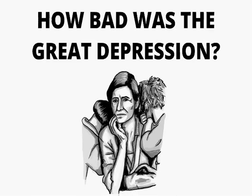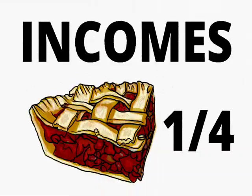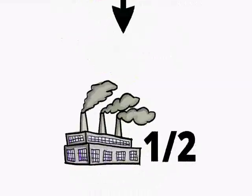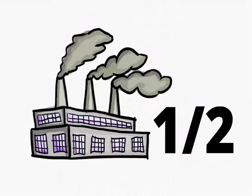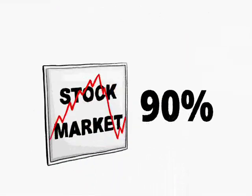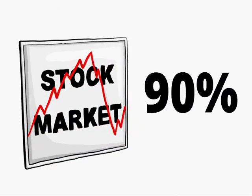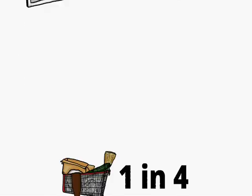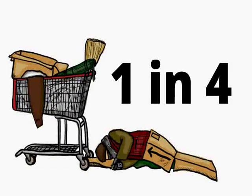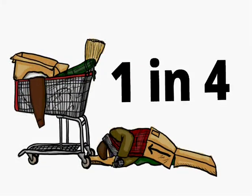Exactly how bad was the Great Depression? Over four years, American incomes were cut by a quarter. Production fell by more than half. Stocks fell an astonishing 90% of the original price. And one out of every four workers was out of a job. But how did all of this happen?